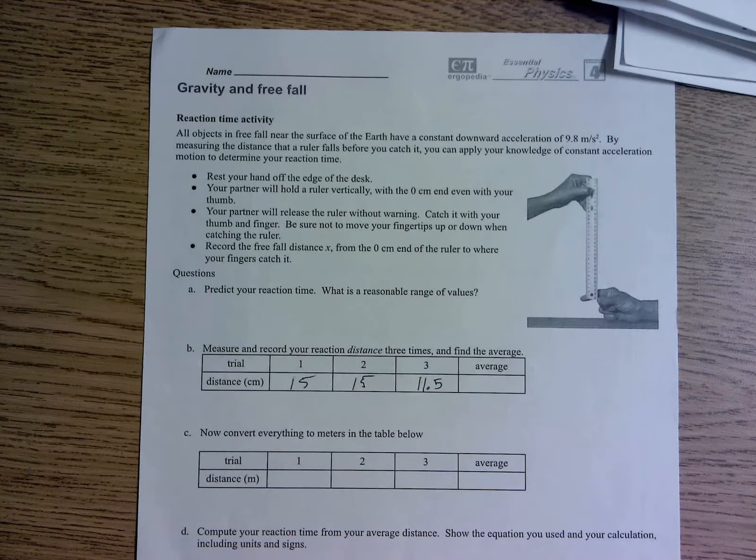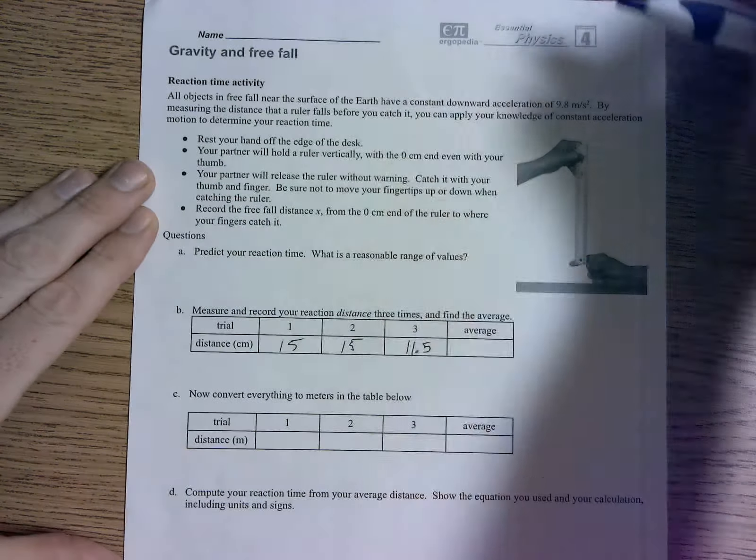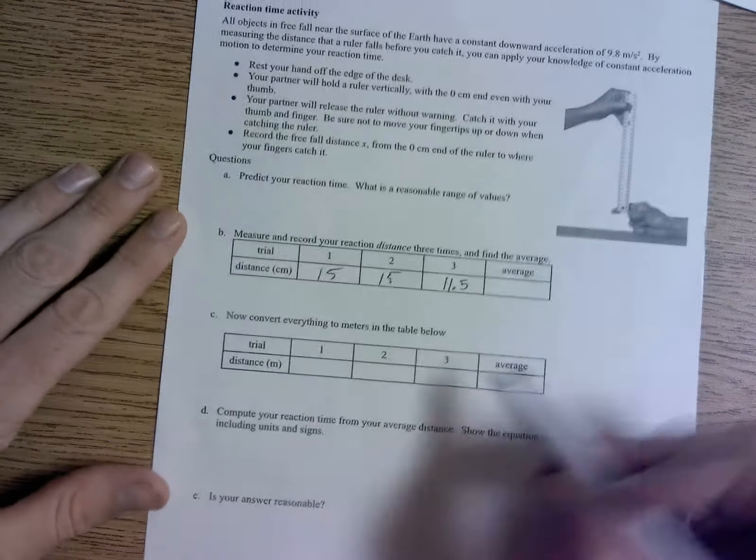But I don't think you guys are going to be that slow. So just pick a reasonable range of values where you can predict your reaction time. Is it also reasonable to say your reaction time is zero seconds, like 0.0 seconds? I don't know, maybe, I don't think so. Pick a reasonable range of values for yourself there.